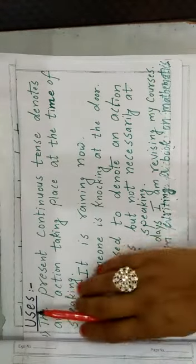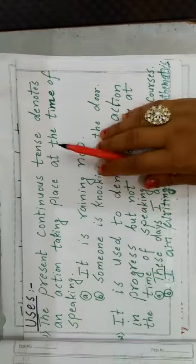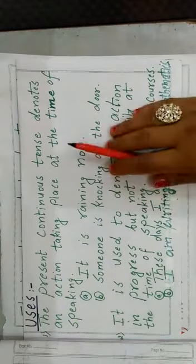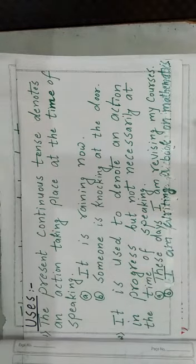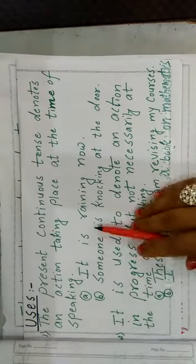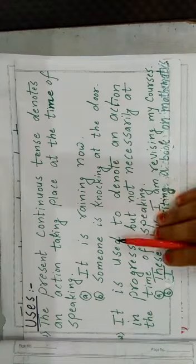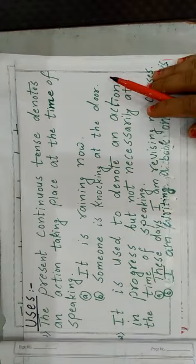See the uses. The present continuous tense denotes an action taking place at the time of speaking. It means that's happening right now. Such as, it is raining now. Someone is knocking at the door.